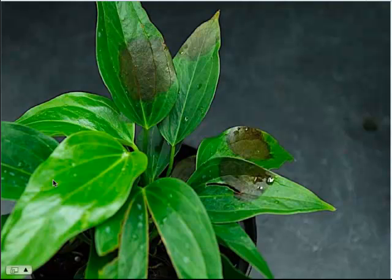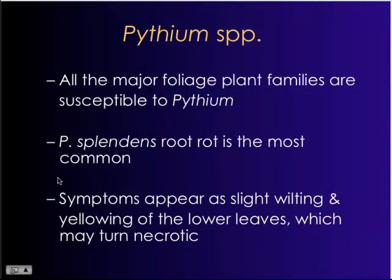Here is what it looks like on anthuriums — you get a water-soaked discoloration, with the key feature being that dark brown to black tissue. Under favorable environmental conditions, this pathogen can move through large numbers of plants in a very short period of time. Literally within 48 to 72 hours, you can get a severe outbreak in a nursery that causes widespread plant fatality.